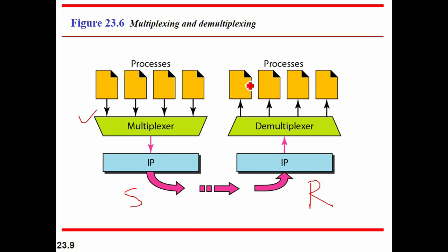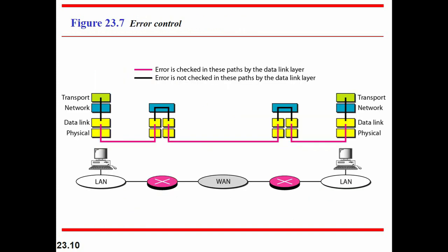There are two kinds of services in the transport layer: it can be either connectionless or connection oriented. In connectionless, you do not need to set up any connection. Packets are sent from one node to another without any connection establishment or connection release. Packets are not numbered, there may be some delay, there may be some loss, packets may be out of sequence, and there is no acknowledgement. But in the case of connection-oriented, you establish a connection, then transfer the data, and when the transfer is done, you terminate the connection.